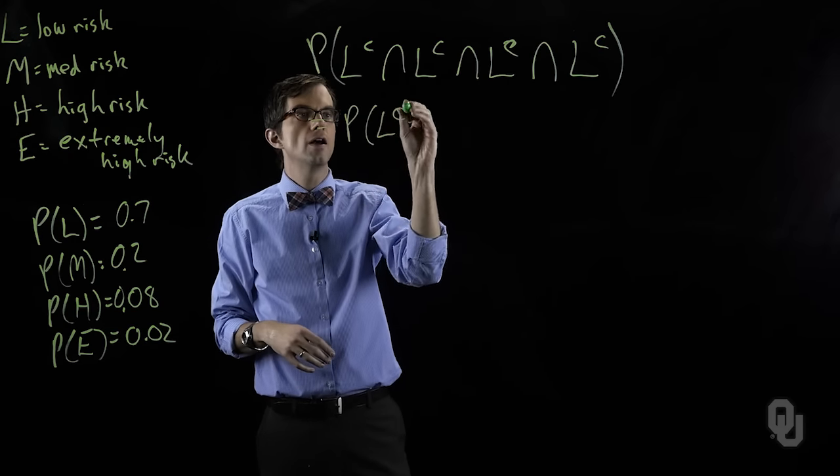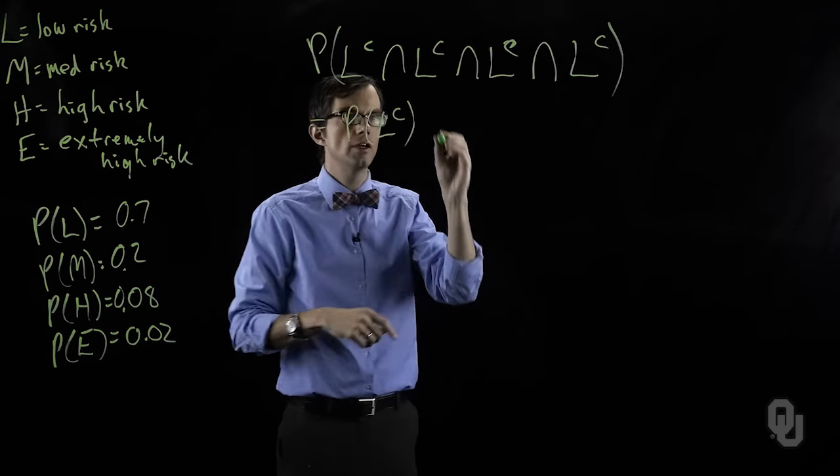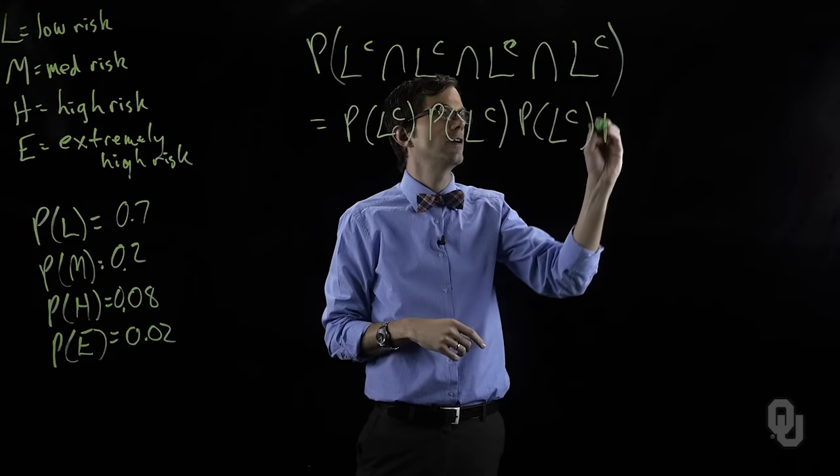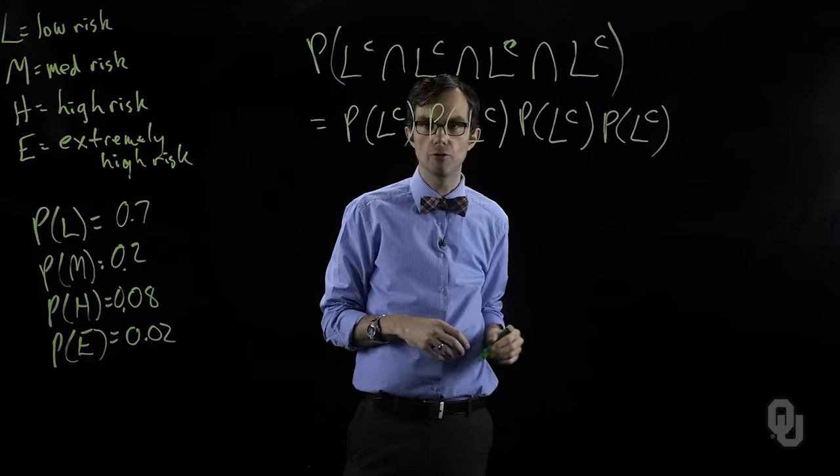So this is equal to the probability of not low risk times the probability of not low risk times the probability of not low risk times the probability of not low risk.